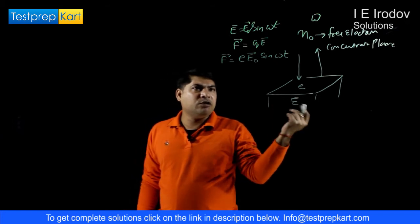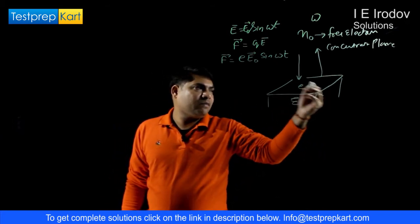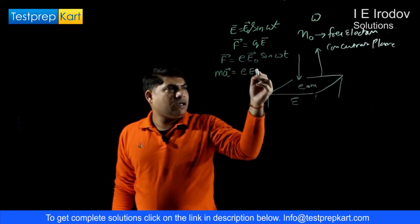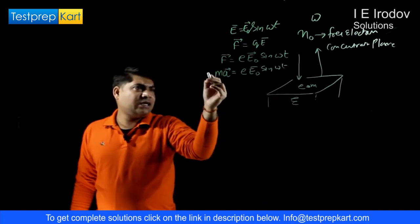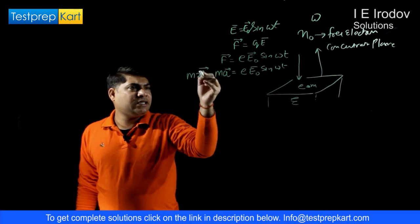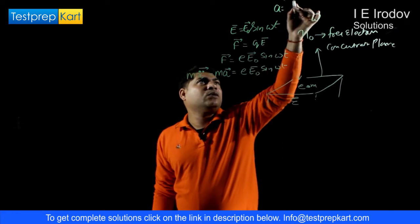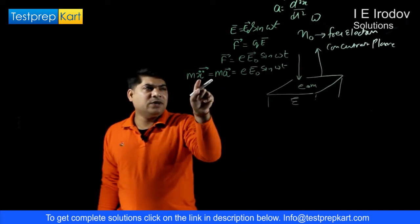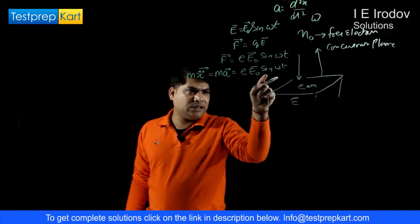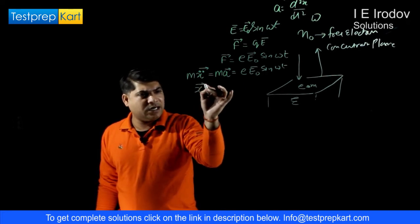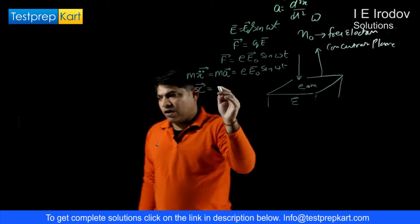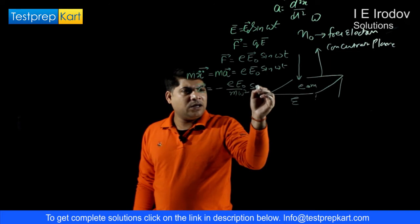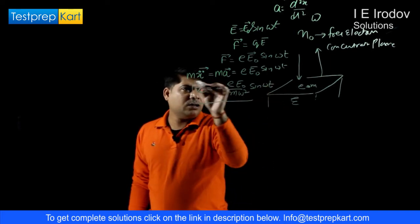Applying Newtonian physics, if this particle has mass m, then it will experience acceleration equals to (e/m) E0 sin(omega t). This acceleration can also be written as the second differentiation: a = d²x/dt². From here we can calculate the displacement vector x by integrating this expression twice, and we get x = -eE0 / (m omega²) sin(omega t).